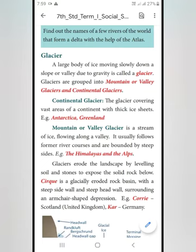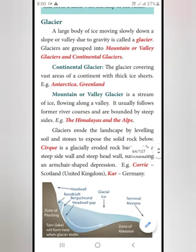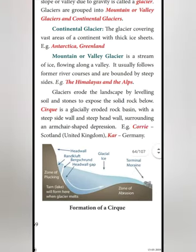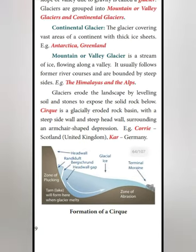Next one: Mountain or Veli Glacier. It is a stream of ice — stream means Wodai — flowing along a valley. It usually follows former river courses and is bounded by steep sides. Examples: the Himalayas and the Alps.